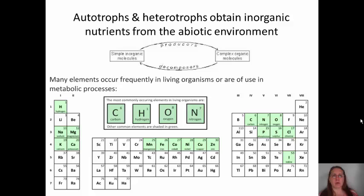Autotrophs and heterotrophs all have to obtain inorganic nutrients from the abiotic environment. Whether they're a producer, a consumer, or a decomposer, they all have a need for nutrients. Many elements occur frequently in living organisms and are useful in metabolic processes. Our main four are carbon, hydrogen, oxygen, and nitrogen, but you also have phosphorus, sulfur, and about 14 others such as iron, manganese, potassium, and calcium. All of these are necessary for our metabolic processes.